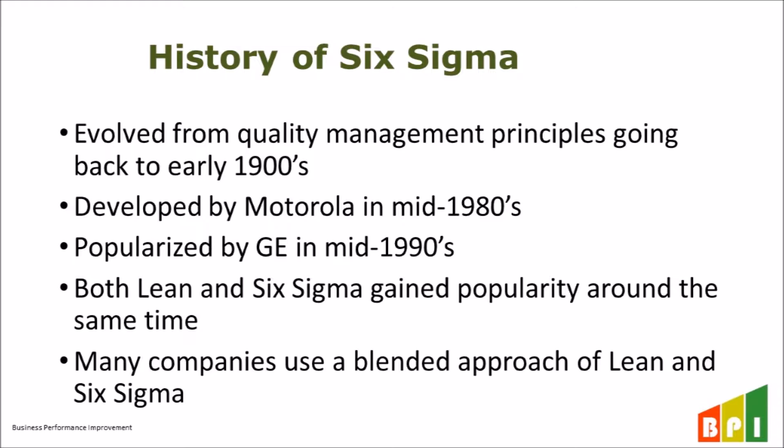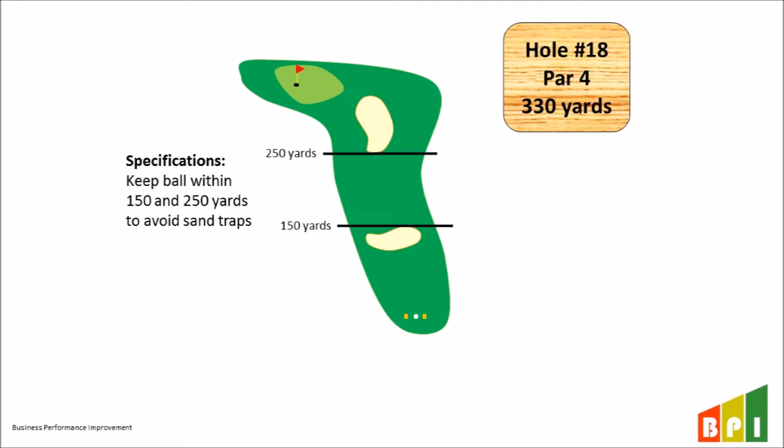We put together an example using golf, since it's a sport most people are familiar with. When you tee off, there are certain requirements to have a good shot. To keep it simple, let's only focus on distance. There are two sand traps in this hole — one just past 150 yards, and the other starting at 250 yards. As I tee off, I'm going to see where the ball lands, and if I can keep it within 150 and 250 yards, then it would be considered a good shot.